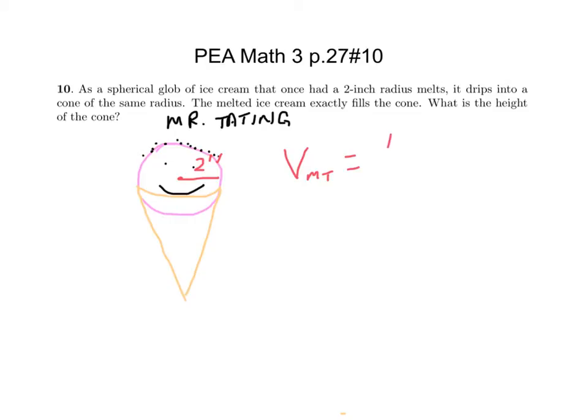Four thirds pi r cubed, so four thirds pi times two to the third power. And I think we ended up with, anybody have this already? 35? Okay, so 33.5 cubic inches.